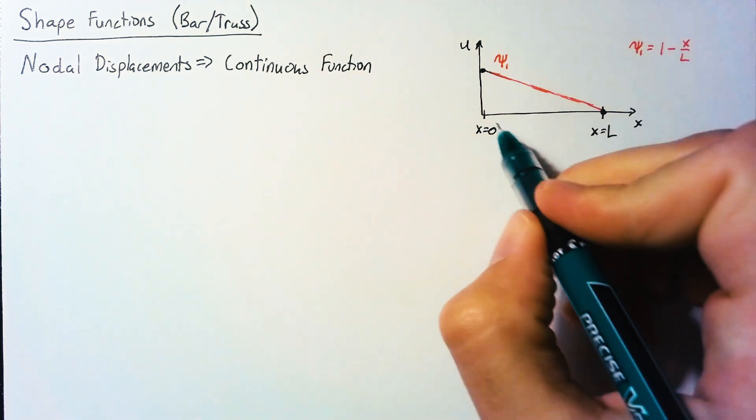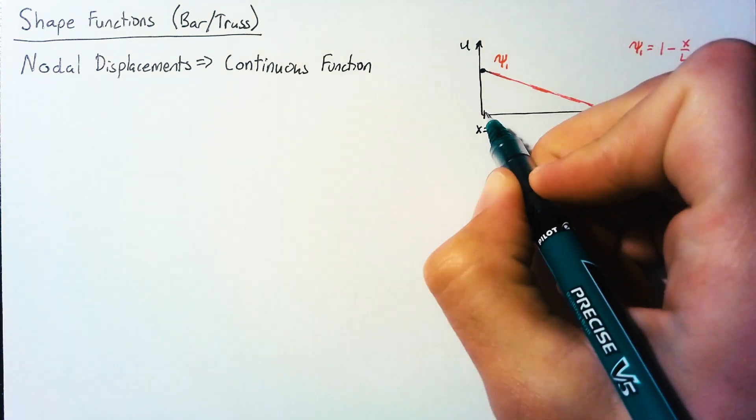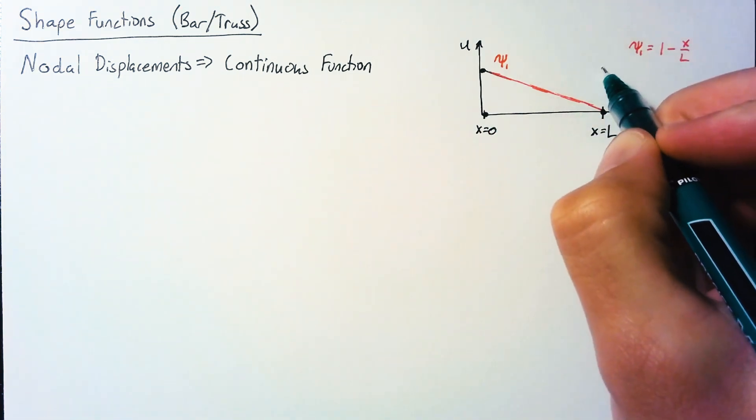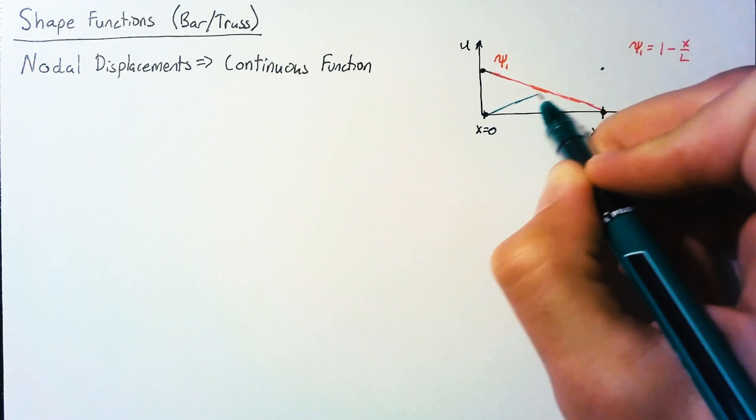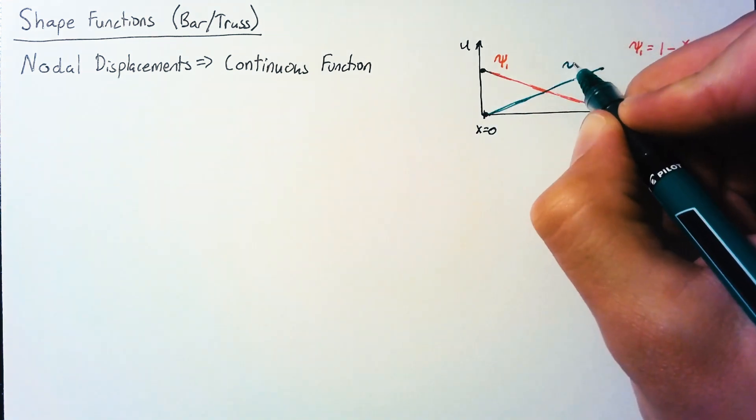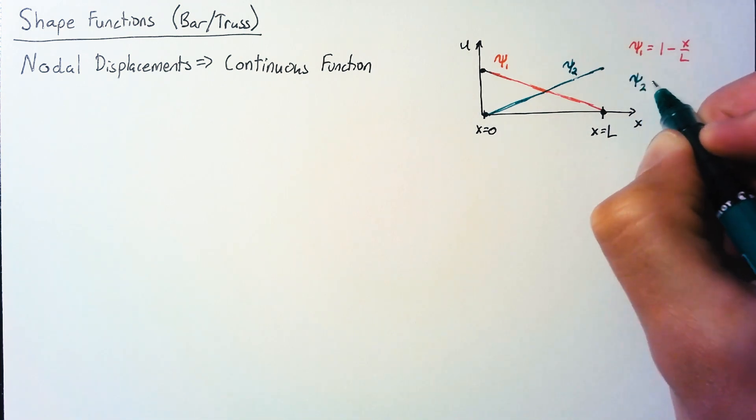Now we can do the same thing, but this time our displacement at 0 is equal to 0, and at l it's equal to 1. We're still going to have a straight line, but the slope is going to be in the opposite direction. Our shape function here is just x over l.